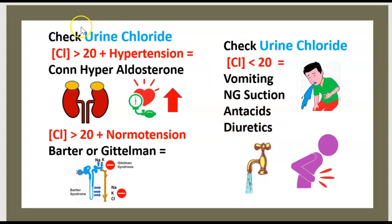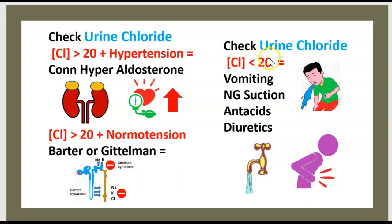To repeat: check urine chloride. If chloride is over 20 and there is hypertension, it could be Conn syndrome or primary hyperaldosteronism. If chloride is less than 20, think vomiting, antacids, or diuretics.